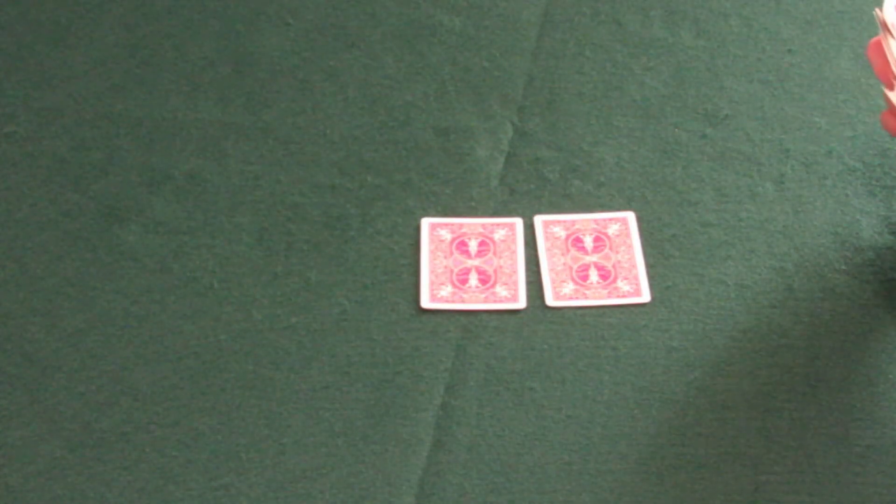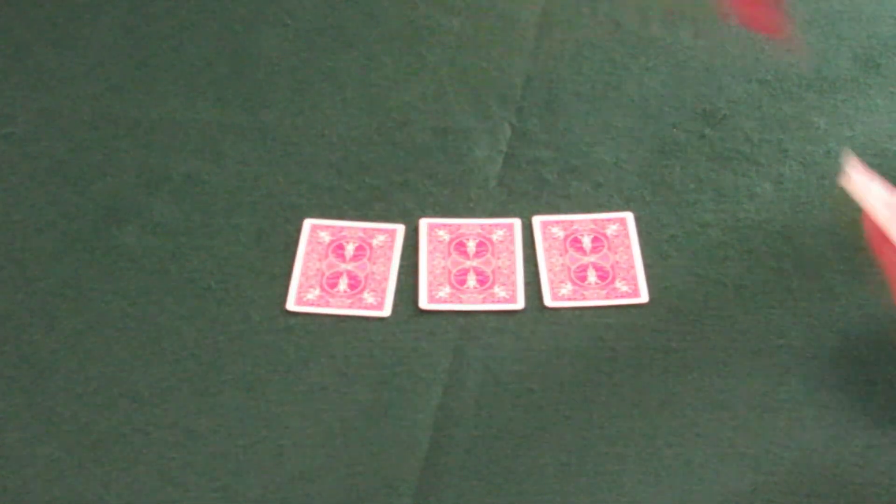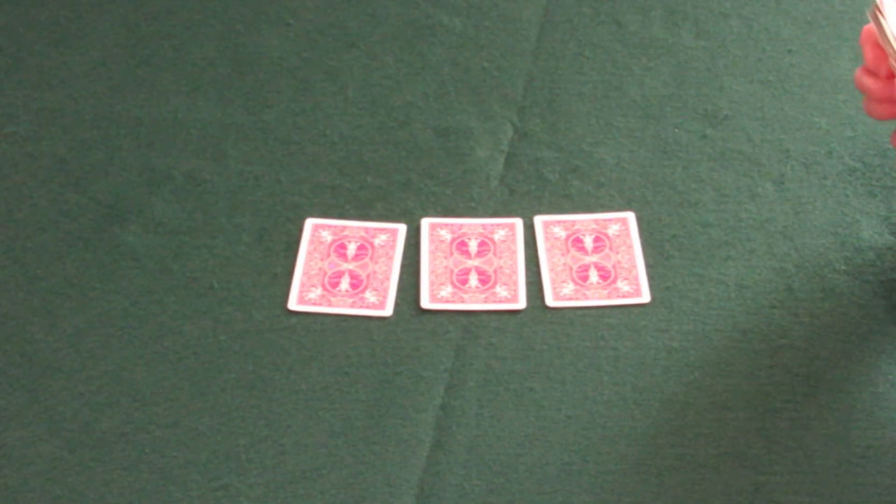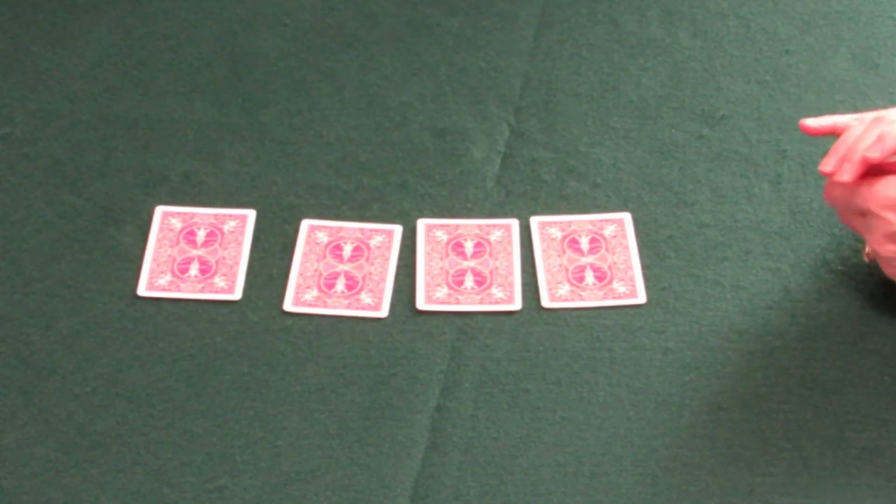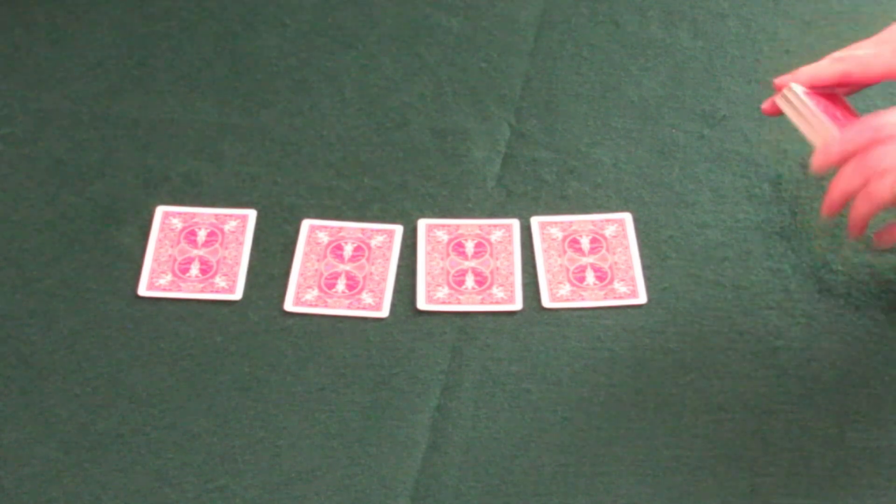Very good. Continue through the deck, looking for the third king that you put in that particular spot. Excellent. Keep going. One more king to go. Very good. Square the deck up. Don't disturb the position of anything. You put the deck in that position. Keep it that way. Hand the deck to Jeff.